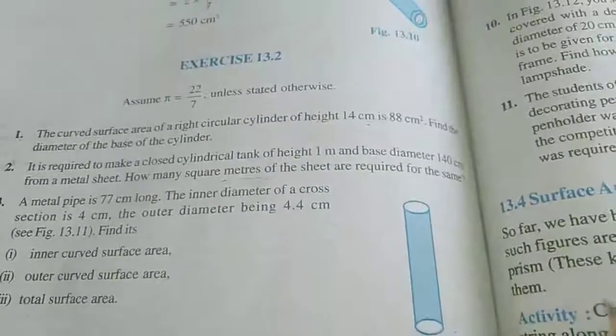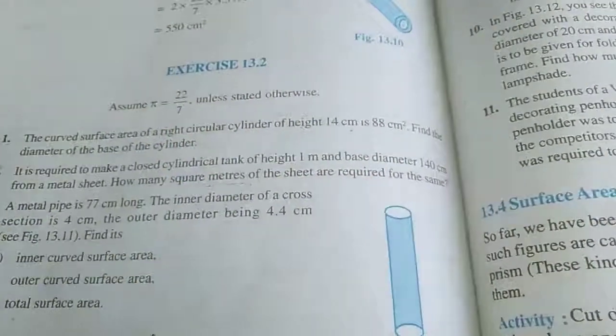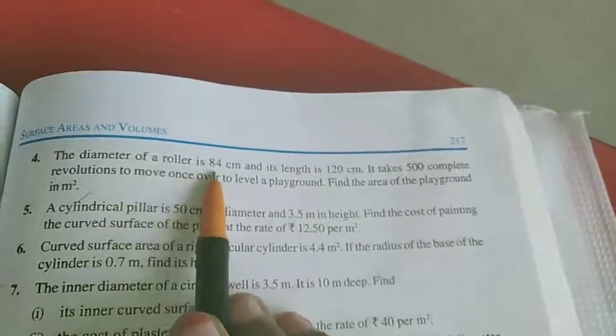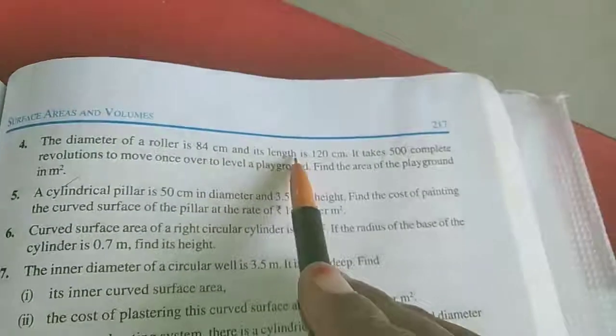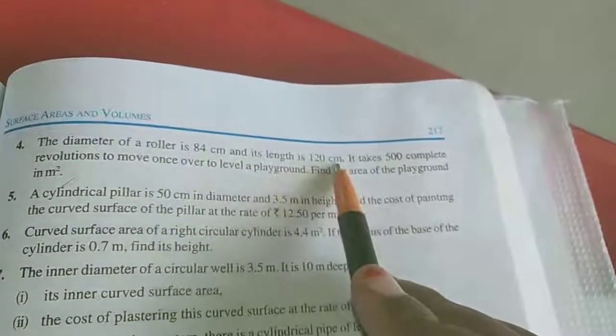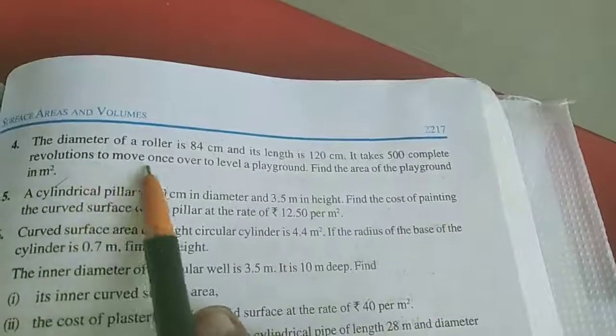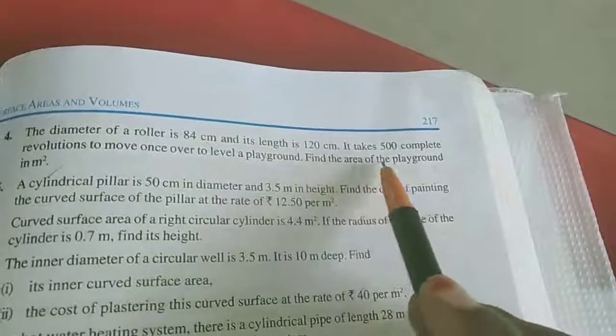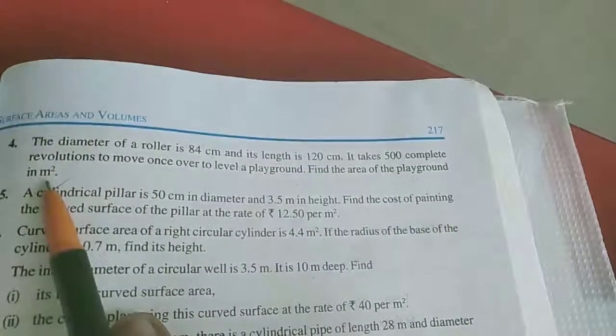Hi dears, in last class we completed exercise 13.2, first 3 sums. Now we will move to the 4th sum. See the 4th sum: the diameter of a roller is 84 cm and its length is 120 cm. It takes 500 complete revolutions to move once over to level a playground. Find the area of the playground in meter square.